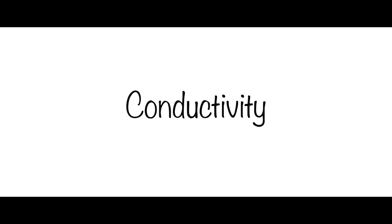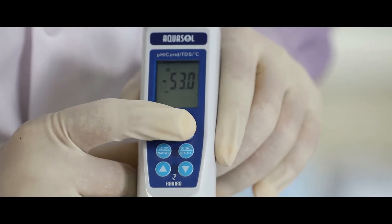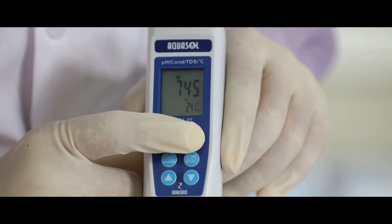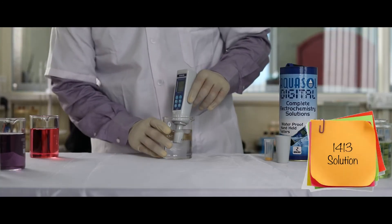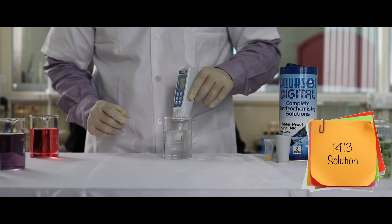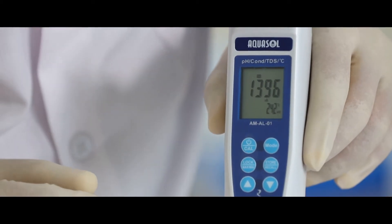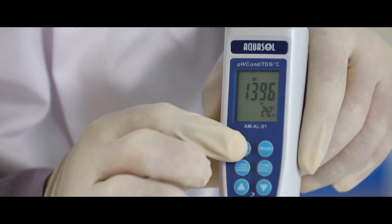Now for conductivity calibration. Press mode key to change from pH to conductivity. Dip the electrode in the standard 1413 solution. Stir gently for a stable reading and then press CAL key.